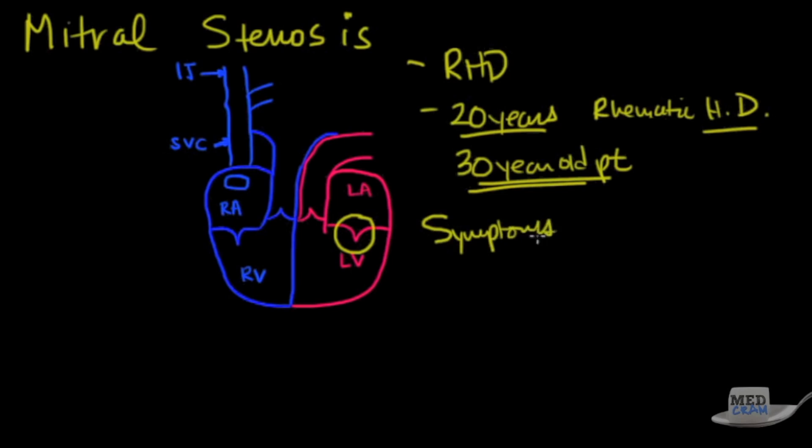The symptoms are pretty straightforward. Basically you're going to see dyspnea, which is shortness of breath. You're going to see orthopnea, which is shortness of breath when you lay down. You might see paroxysmal nocturnal dyspnea where they wake up suddenly short of breath. Sometimes you might see hemoptysis.